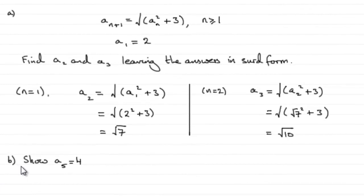Now for this last part, part B, we've just got to show that the fifth term in the sequence, A5, equals 4.